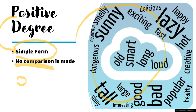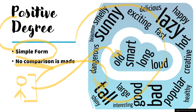For example, if I am asking you to describe a person, I am not asking you to compare this person. I am just asking for a describing word for anybody or any particular thing. You can say this person is tall, this person is old, or this person is lazy. All adjectives we have done so far are simple forms, and the most important point about this category is no comparison is made.